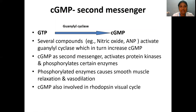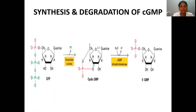The second second messenger is cyclic GMP, which is derived from GTP by the action of guanylyl cyclase enzyme. Several compounds like nitric oxide and atrial natriuretic peptide activate guanylyl cyclase, which increases cyclic GMP. Cyclic GMP, similar to cyclic AMP, activates protein kinases and phosphorylates certain enzymes, bringing about smooth muscle relaxation and vasodilation. Cyclic GMP is also involved in the rhodopsin visual cycle. Similar to cyclic AMP, cyclic GMP is quickly inactivated by phosphodiesterase.